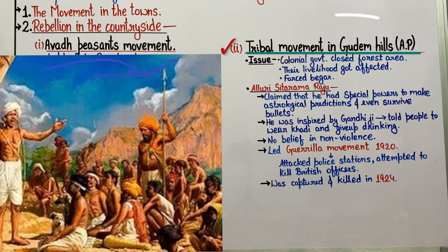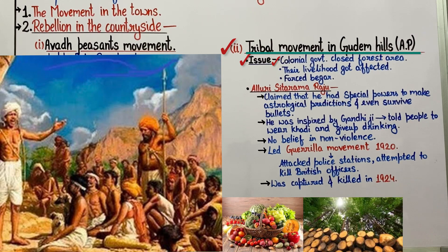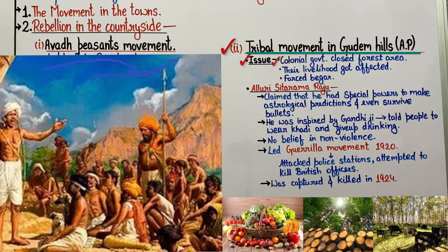The people who were living in the Gudam Hills of Andhra Pradesh started this movement. The tribal population was worried about the British government. Why? Because the British stopped them from going to the forest. These tribal people were completely dependent on the forest — for fruits, wood, vegetables, and also cattle for their food.